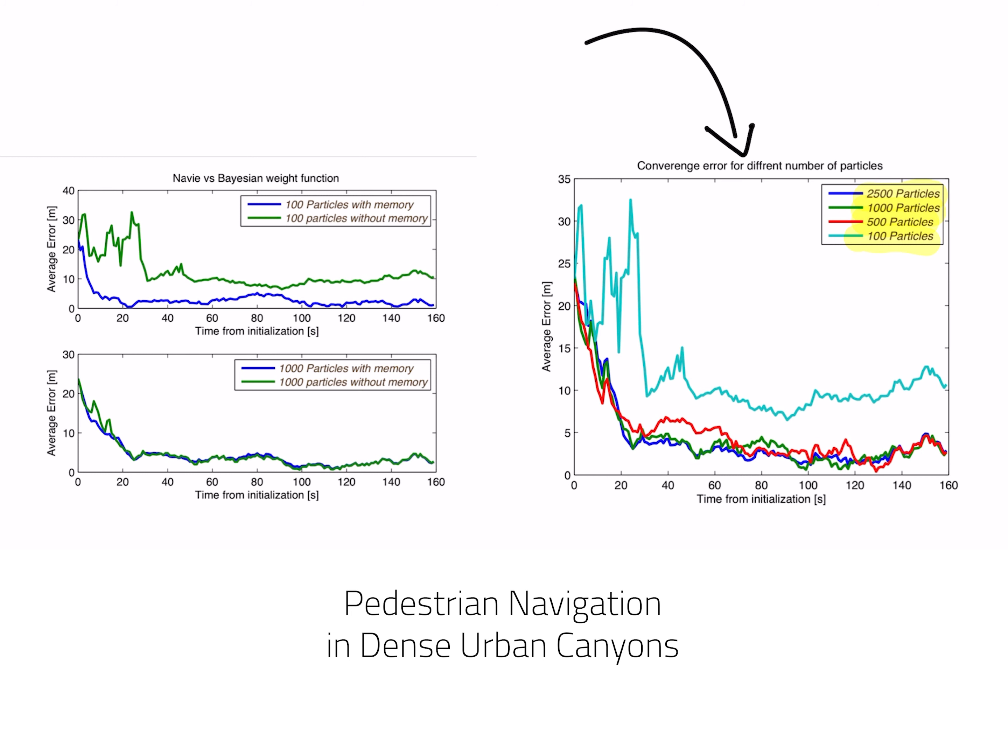But sometimes, as we have discussed before, one cannot afford the efficiency that comes with many particles. Now what I'm going to show you is two different examples. In this graph, what we have done is to compare the two kinds of weight function. First is a naive weight function, which the weight of each particle is determined by its current states and its current states only. The second is the most sophisticated Bayesian function, when the weight of each particle at a current state is also determined by x of t minus one.